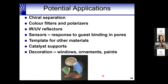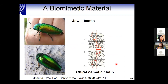Possible applications include chiral separation, reflectors and polarizers for different wavelengths, sensors — these materials are very sensitive to guest binding which changes the refractive index and color — catalyst supports, and decorative applications like enhancing the color of paints and ornaments. There's also a cool connection with nature: the jewel beetle has beautiful iridescent wings that get their color from a chiral nematic organization of chitin nanocrystals, which has exactly the same optical properties as our cellulose nanocrystals and the glasses we produce.